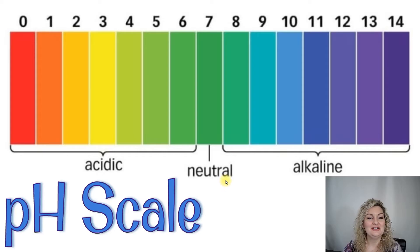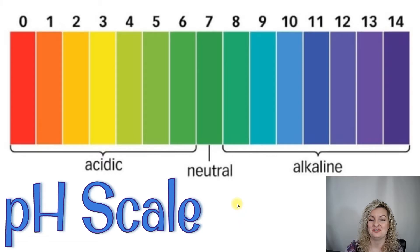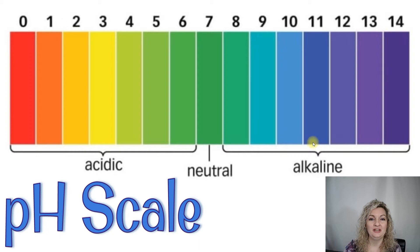Here's our pH scale, and you can see that it goes from 0 to 14. Smack in the middle is going to be 7, and 7 is considered neutral. 7.0 is neutral. So anything from 0 all the way to 6.9 we consider acidic, and anything from 7.1 all the way to 14 we consider alkaline, or you may hear it called basic. Either one works.